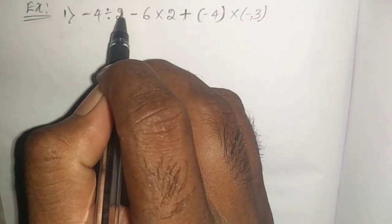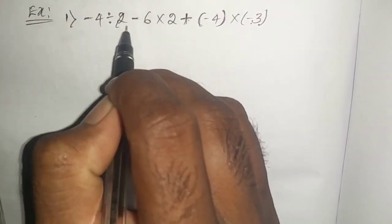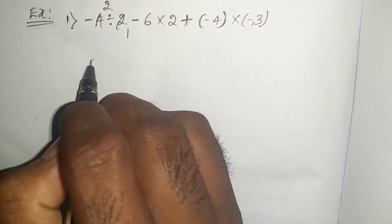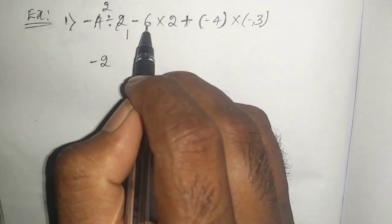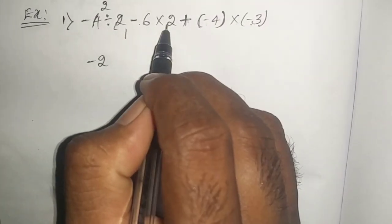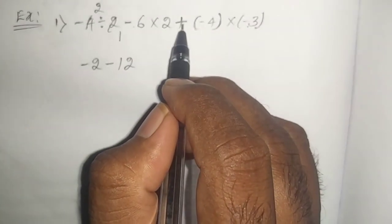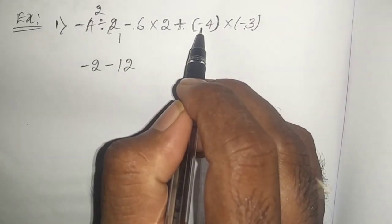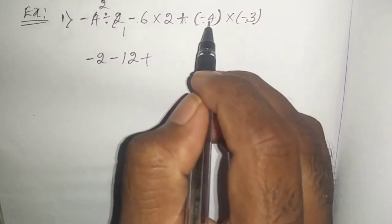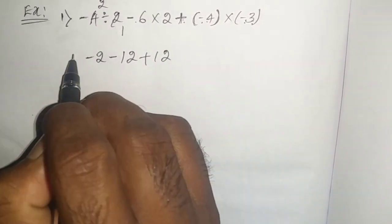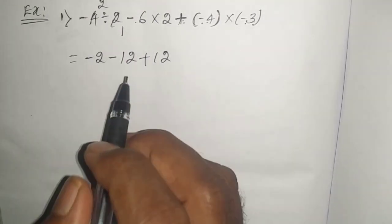First we have to divide. Two ones are two, twos are, so here minus two will come then minus into plus minus six, twos are 12 and here plus is there. See multiply these things plus into minus minus, minus into minus plus, fourth is a 12. So now just observe the sign.